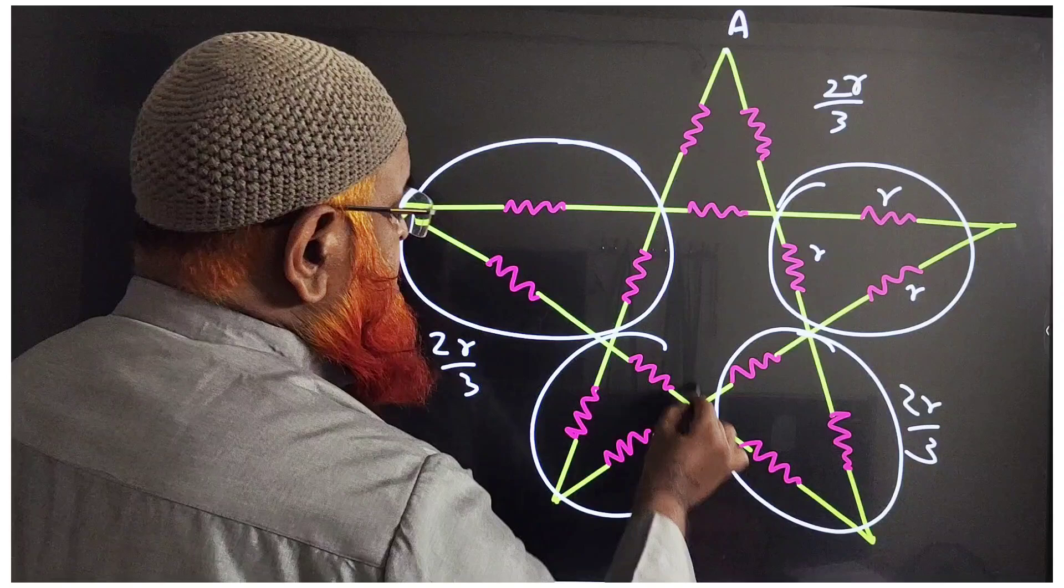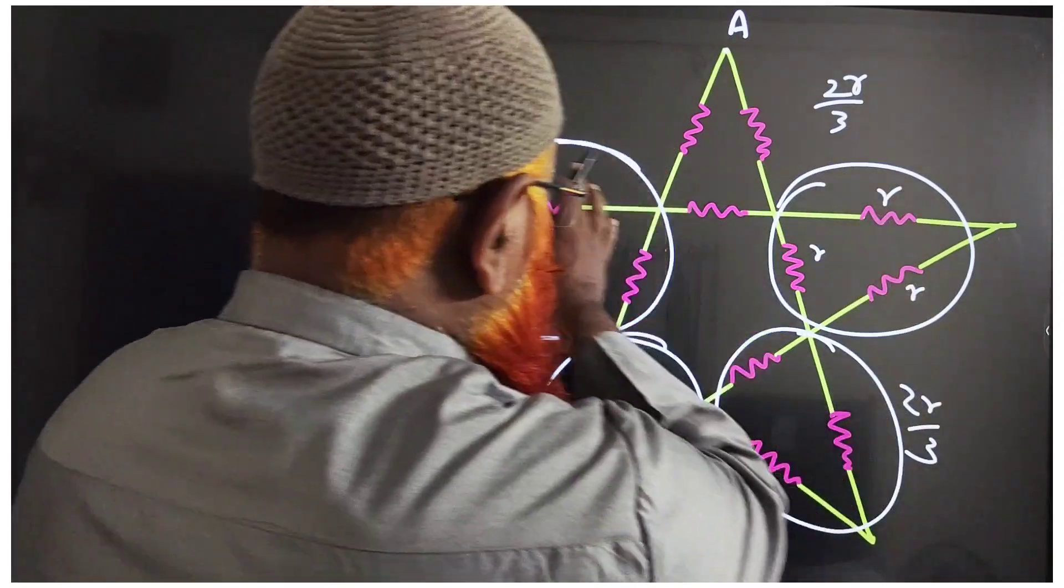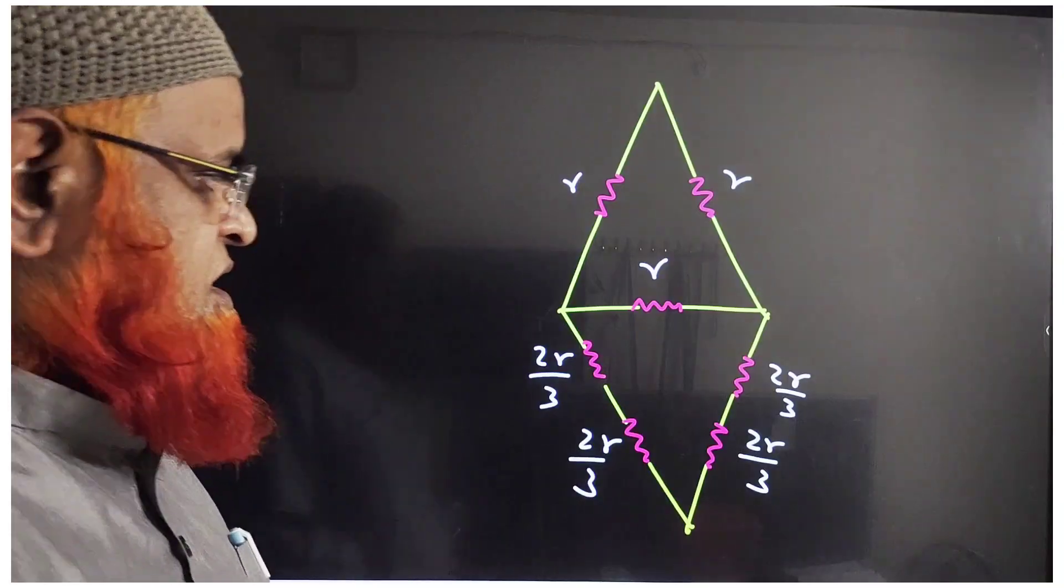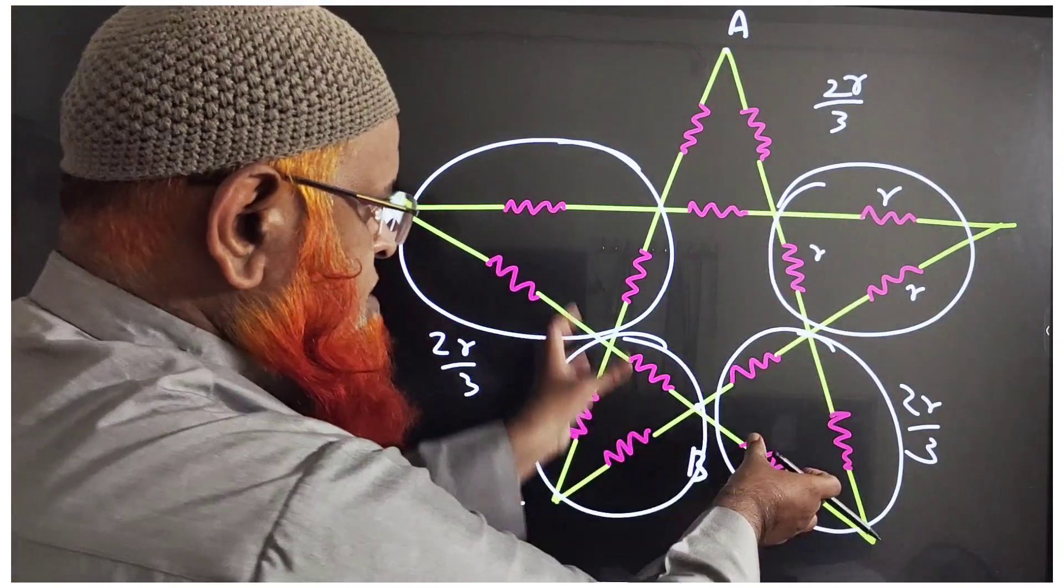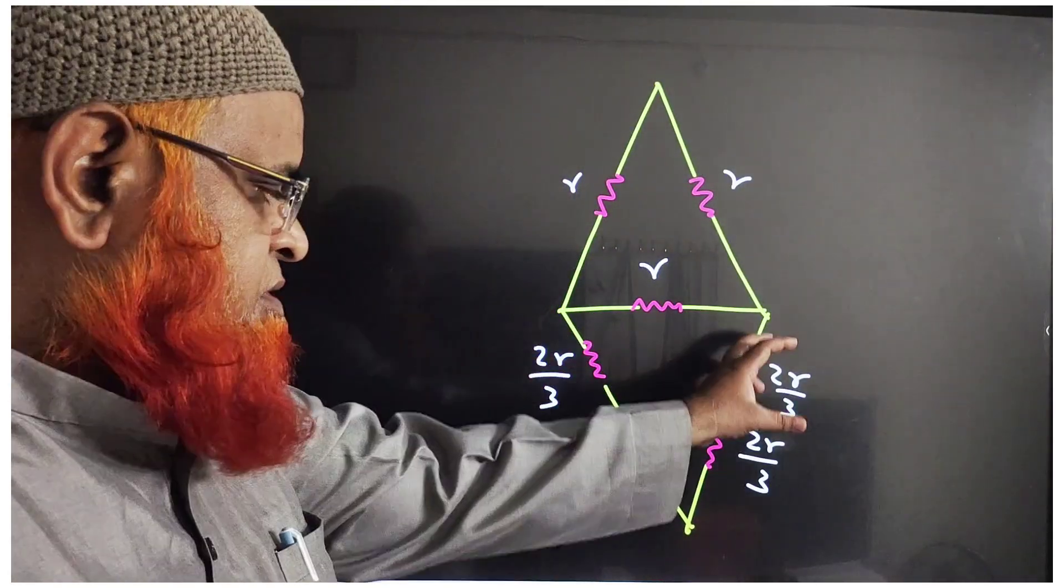Similarly, this is also going to be 2r by 3. If these are 1, 2, 3, 4 resistors of 2r by 3, here I will modify this diagram. Now just here, this diagram shows 2r by 3, 2r by 3, 2r by 3, here r, here r. Now I am converting this like this.